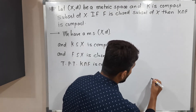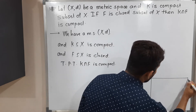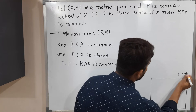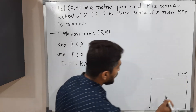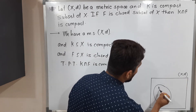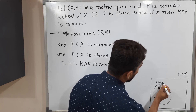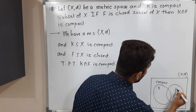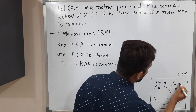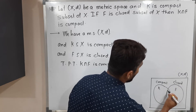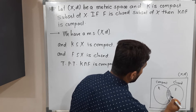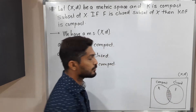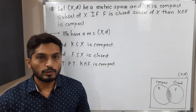Let me draw a diagram so the picture will be clear. We have our metric space (X, d). We have a set K which is compact, and another set F which is closed. What we have to prove is that the common part — K intersection F — is compact.